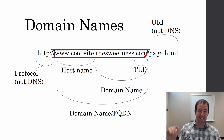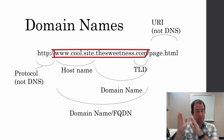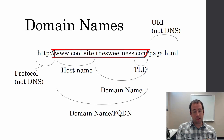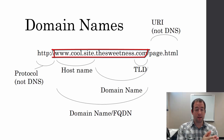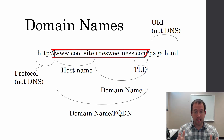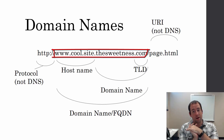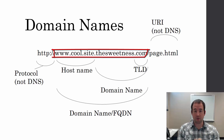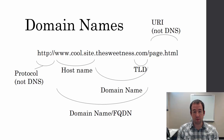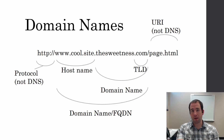The whole thing all together can sometimes be called the domain name. Sometimes the domain name is just thesweetness.com, and sometimes the fully qualified domain name — FQDN — is www.cool.site.thesweetness.com. That's all DNS. The whole point is to translate all of that information into an IP address that your computer can use to point to a specific machine somewhere in the world, so your computer can talk to it.